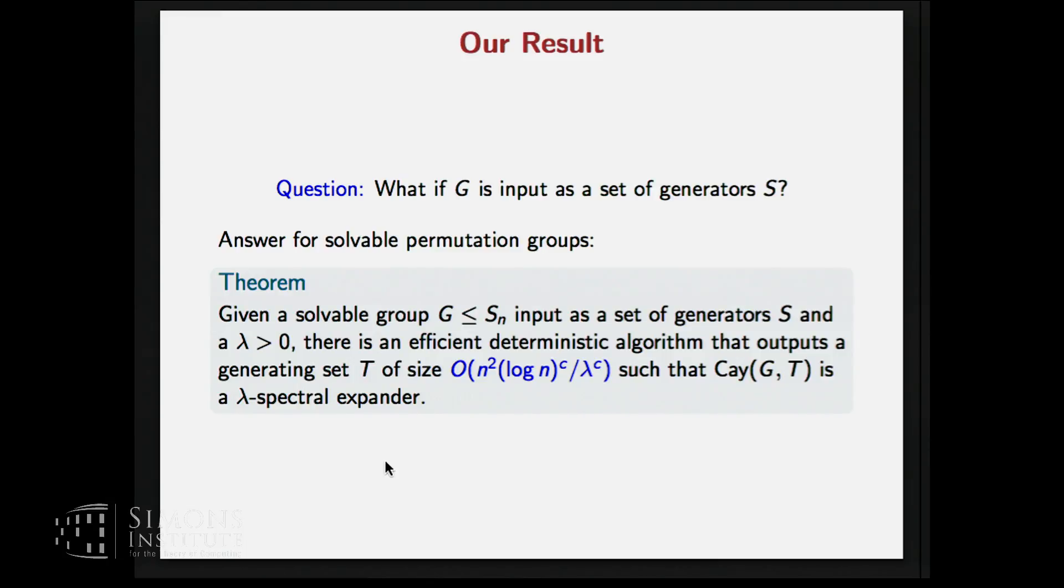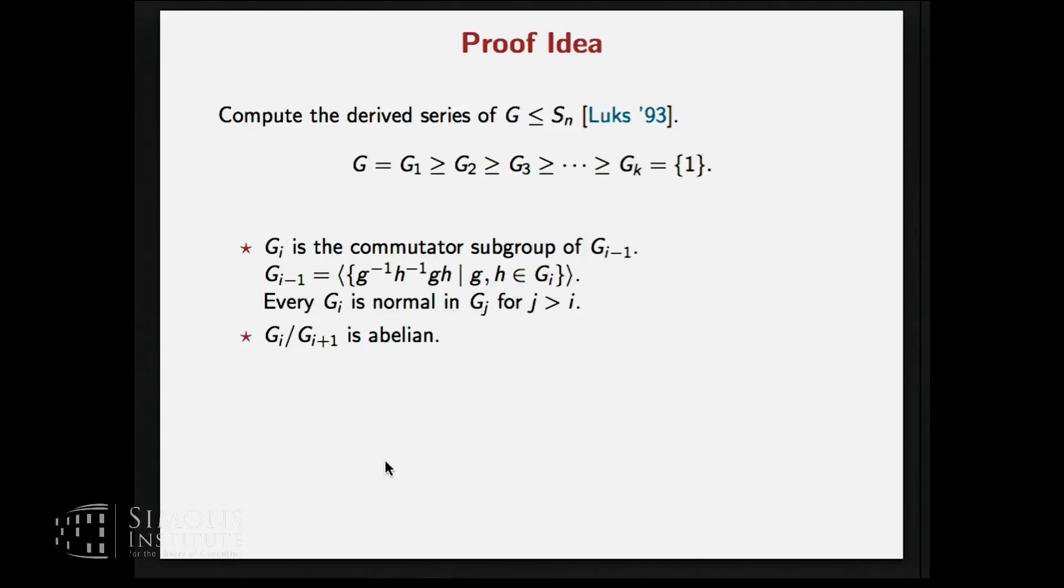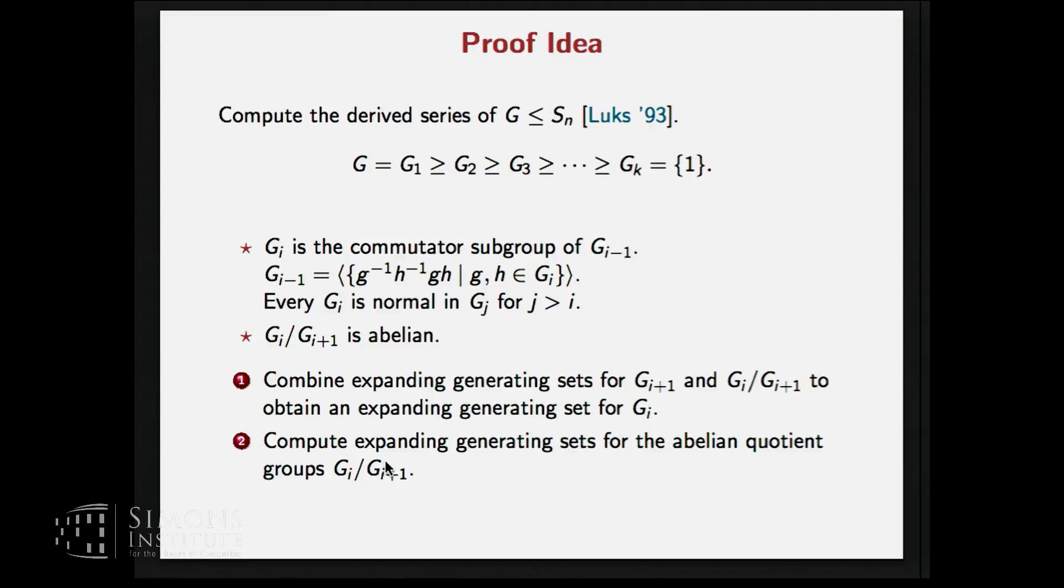We answer this question for solvable permutation groups and we give a generating set of this particular size which is lambda expander. So when we talk about solvable groups, the obvious property that is useful is that they have a derived series of this form. So here we have a derived series G1, G2, G3 up to Gk and every Gi is normal in Gi+1 and the quotient group Gi+1/Gi is in fact an abelian group. So how do we plan to use it? So if we have an expanding generating set for Gi+1 and also for this quotient group, we want to combine the expanding generating sets for these two and get one for the group Gi. And then we want to apply this procedure repeatedly.